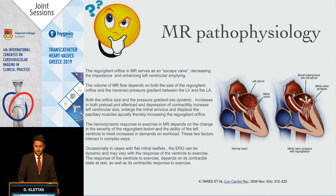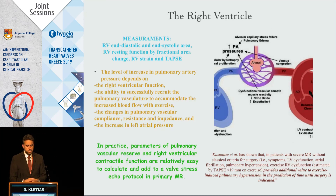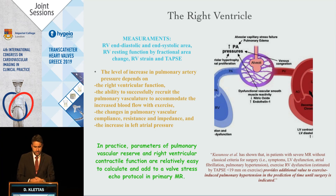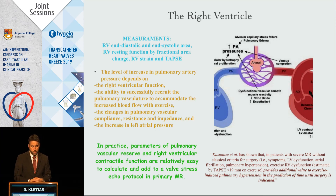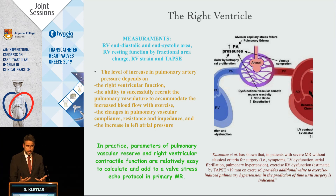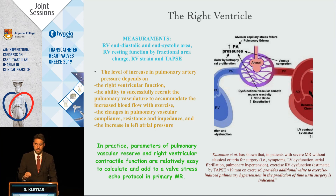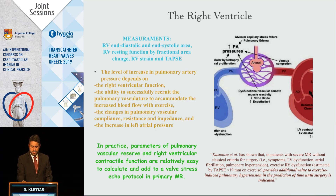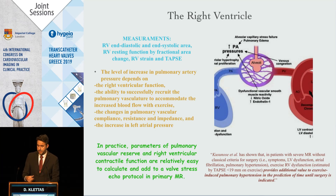It is not only the LV and the mitral valve. The right heart was found to play a crucial role. The level of increase in pulmonary artery pressure, the right ventricular function, the ability to recruit the pulmonary vasculature to accommodate increased blood flow during exercise, and changes in pulmonary vascular compliance all play a crucial role. A recent study showed that TAPSE less than 19 gave additional information for predicting the time until surgery is indicated.